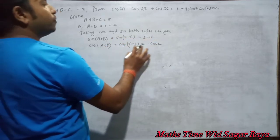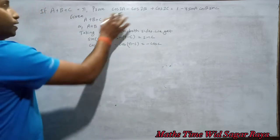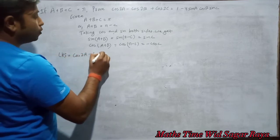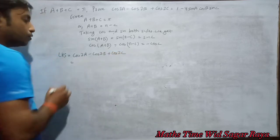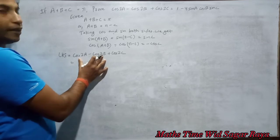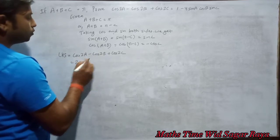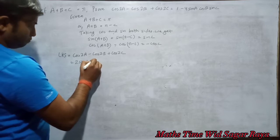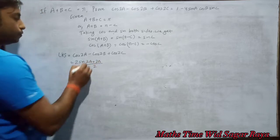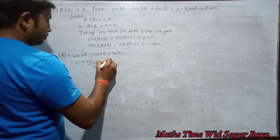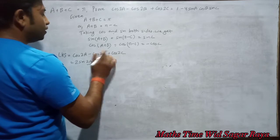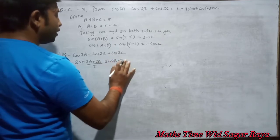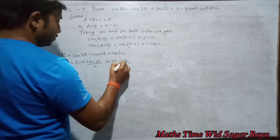Now take the LHS: cos 2A minus cos 2B plus cos 2C. We can apply the formula for cos C minus cos D to the first two terms. The formula gives 2 sin((C+D)/2) · sin((D-C)/2), so we get 2 sin((2A+2B)/2) · sin((2B-2A)/2) plus cos 2C — the 2s cancel to give sin(A+B) · sin(B-A).